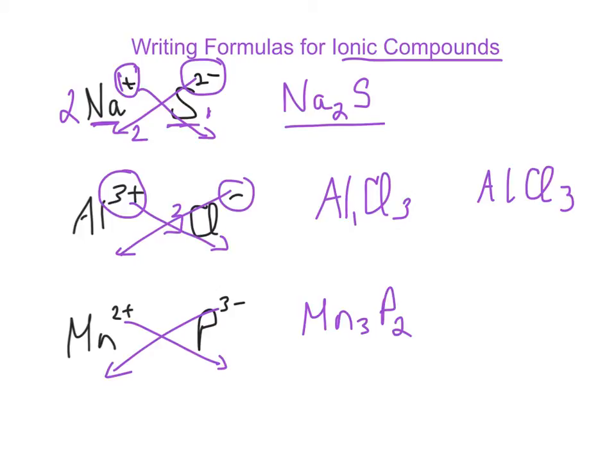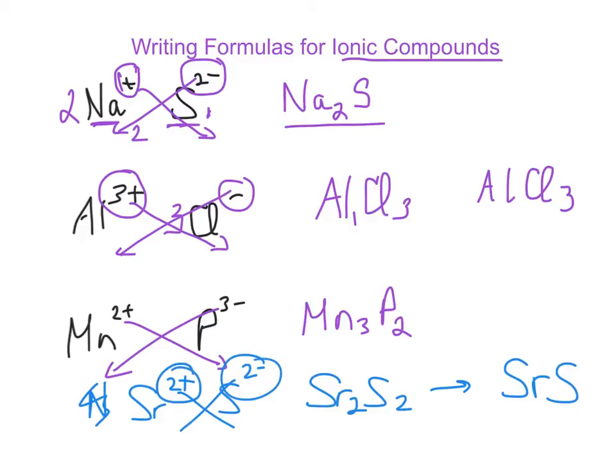Just beware if you have something like Sr2+ and S2-. When I crisscross these, I get Sr2S2, but we want to reduce that to SrS. Can you see that for every one of these, I need one of those? So this would actually be wrong.